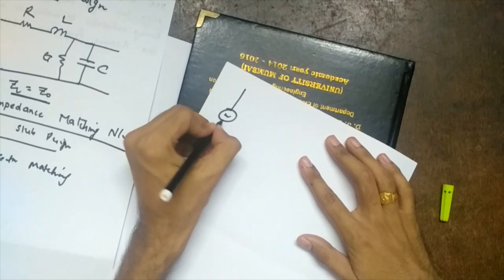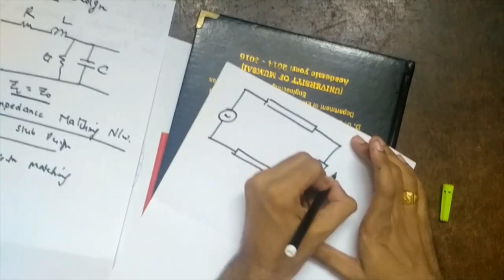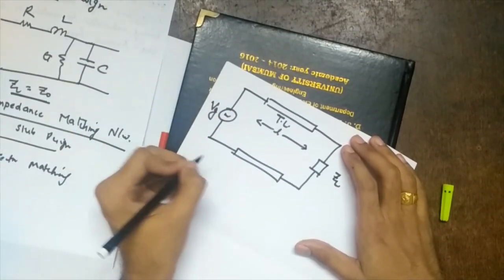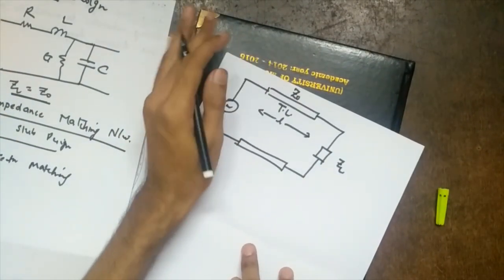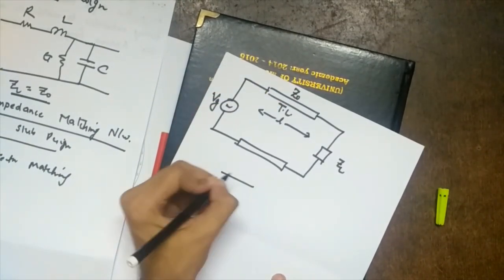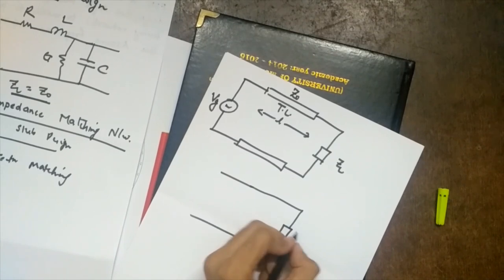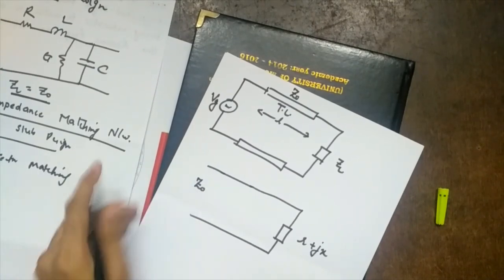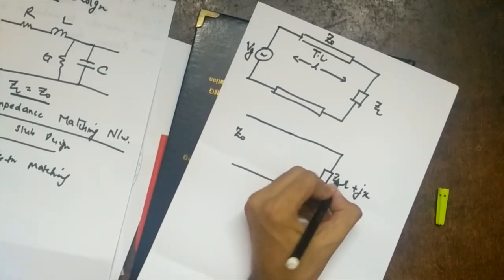For single stub design, draw the standard transmission line circuit: load impedance ZL, transmission line of length l with characteristic impedance Z-naught, and generator voltage Vg. While matching, we are not concerned about the source. ZL is r plus jx and we want to make ZL equal to Z-naught. Since we design on the Smith chart, we normalize — ZL becomes ZL-bar equals ZL divided by Z-naught.